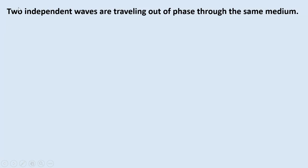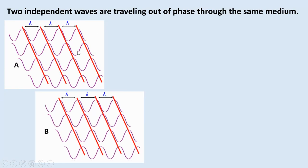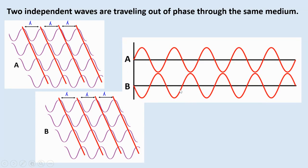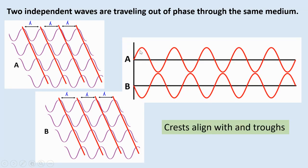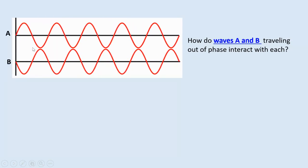Let's see another example. Now we have two independent waves A and B, but they are out of phase, traveling through the same medium. Looking at the front view, the crest of A aligns with the trough of B, and the trough of A aligns with the crest of B — crests align with troughs. This is called a perfect out of phase. So how do waves A and B, traveling out of phase, interact with each other to form a new wave?